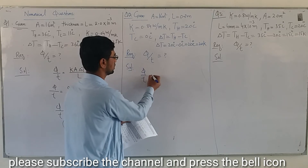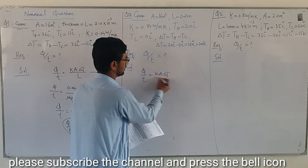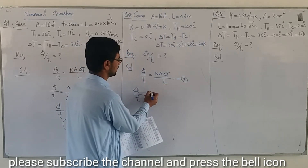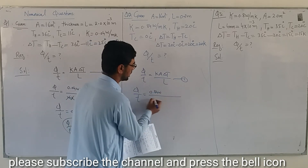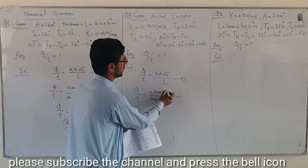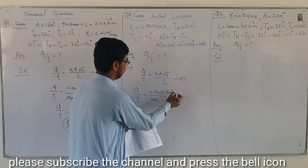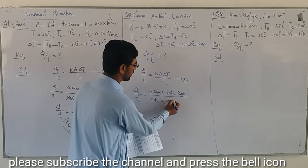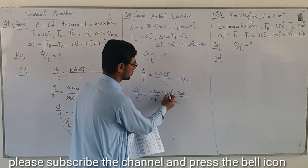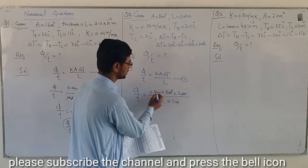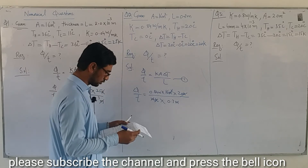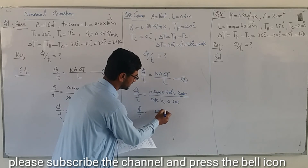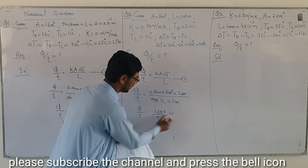Q/t equals k value 0.84 watt per meter per Kelvin, area 16 meter square, change in temperature 20 Kelvin, divided by delta L equals 0.3 meter. After unit cancellation, Q/t equals 896 W approximately.